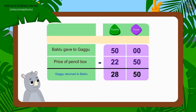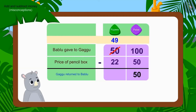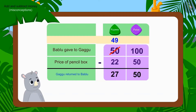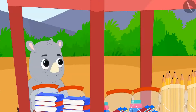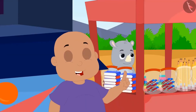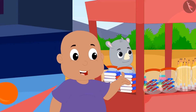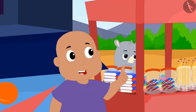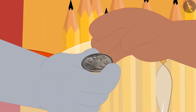Therefore, the amount returned by Gaggu to Bablu was wrong. Children, can you find the right amount by subtracting the numbers written in rupees? Well done, children — you have written the correct answer. Gaggu was to return 27 rupees 50 paise to Bablu. Bablu quickly did the math and found out that Gaggu gave him 1 rupee more. He promptly returned 1 rupee to Gaggu.